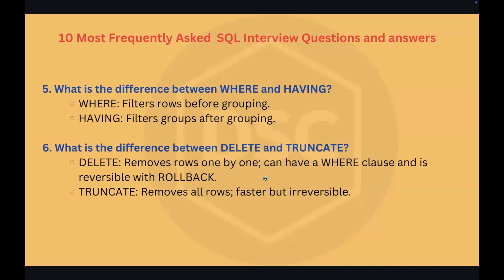Question number six: what is the difference between DELETE and TRUNCATE? DELETE removes rows one by one and can be used with a WHERE clause to remove rows matching specific conditions — and it is reversible with ROLLBACK. TRUNCATE removes all rows, is much faster than DELETE, but is irreversible — you cannot reverse it using ROLLBACK. Note that DELETE without a WHERE clause is similar to TRUNCATE in that it removes all rows, but both DELETE and TRUNCATE preserve the structure of the table.